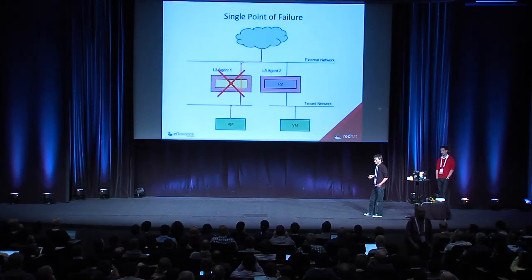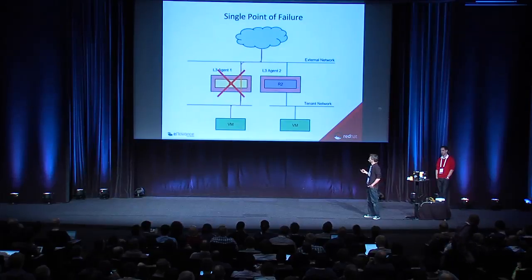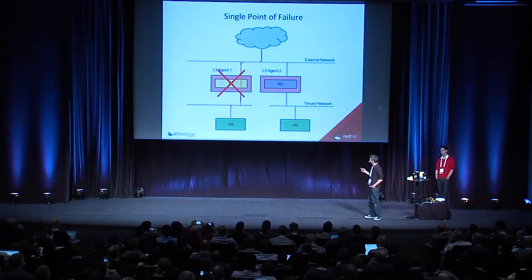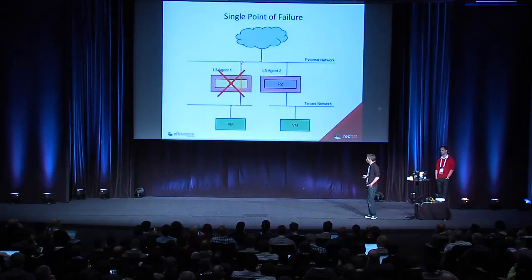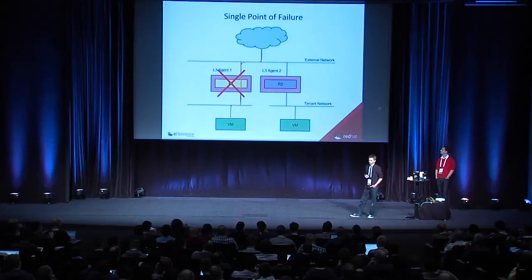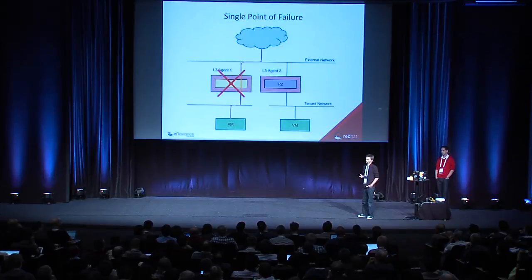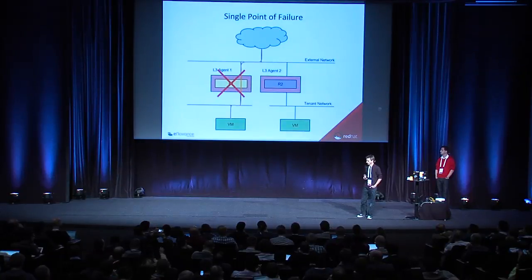Since the Icehouse version, we are able to spawn as many L3 agents as we want. We are able to distribute the load across all the L3 nodes deployed. All the L3 agents can connect to the same external network or to many external networks. But we still have the same issue: if we lose one of the L3 agents, all the VMs connected to it lose L3 connectivity — no more private-to-private traffic and no more private-to-external network traffic.